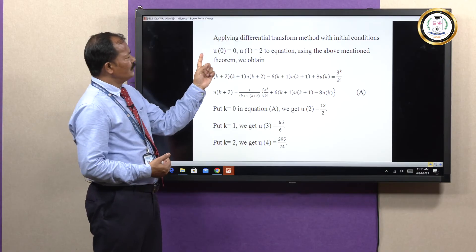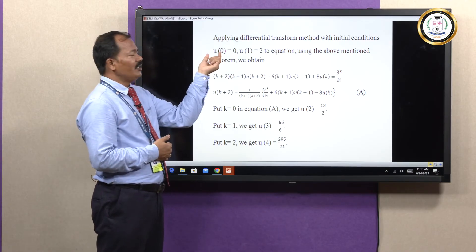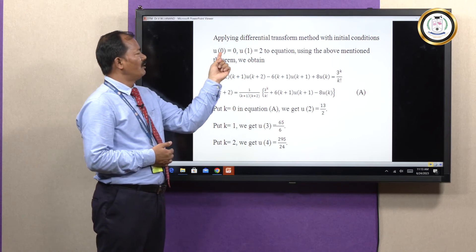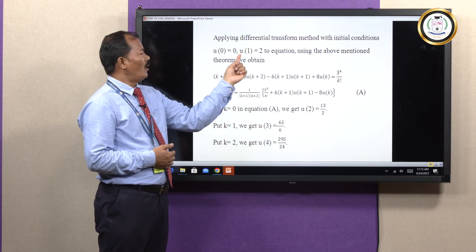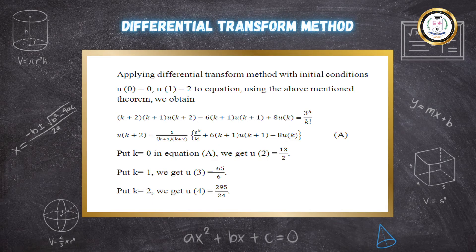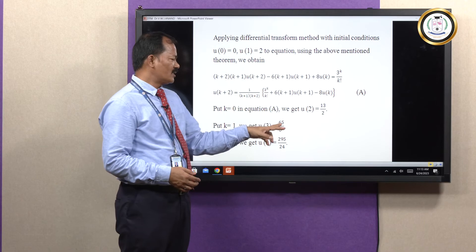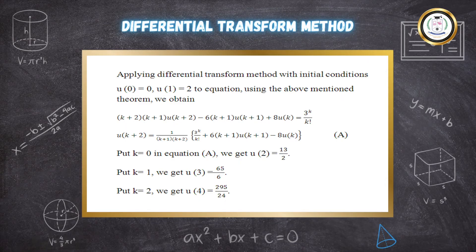Using Theorem 4, the initial conditions transform to U of 0 equals 0 and U of 1 equals 2. Substituting k equals 0 in the recurrence relation gives U of 2 equals 13 over 2. Substituting k equals 1 gives U of 3 equals 65 upon 6. Substituting k equals 2 gives U of 4 equals 295 upon 24.